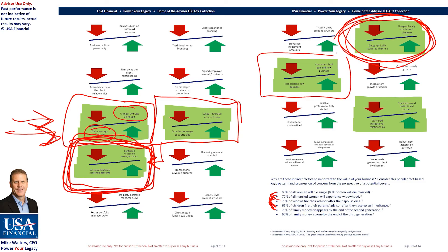We need to have consistent lead generation and new business versus inconsistent lead gen. The pandemic is a little unique, but people were still generating leads, bringing on clients remotely and digitally, running webinars instead of live events. If you haven't been doing that, now's the time — because if you cannot show that you can weather that storm, not only does it hurt your profits and revenue today, but it also hurts the value of your practice in the long run. These things all tie very tightly together.